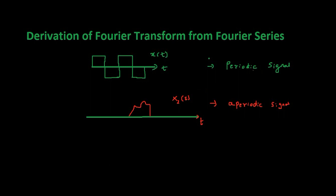So we have two signals here: one is a periodic signal and an aperiodic signal. We know that Fourier series is used to represent a periodic signal in terms of sine and cosine functions. The Fourier series coefficients of a periodic continuous signal can be written as: Ck = (1/T0) * integral from minus T0/2 to T0/2 of x(t) * e raised to minus jk*omega0*t dt.